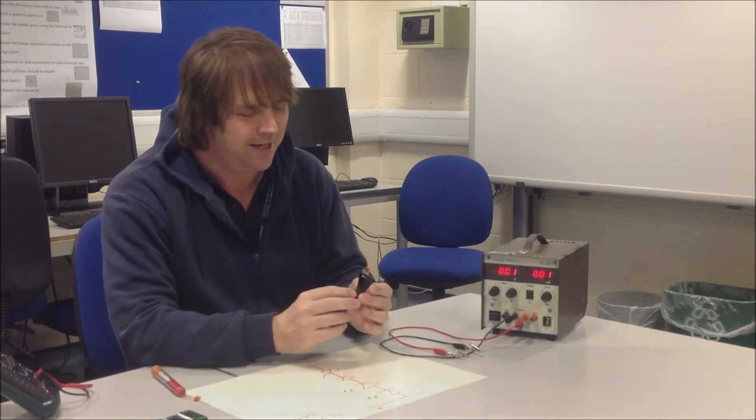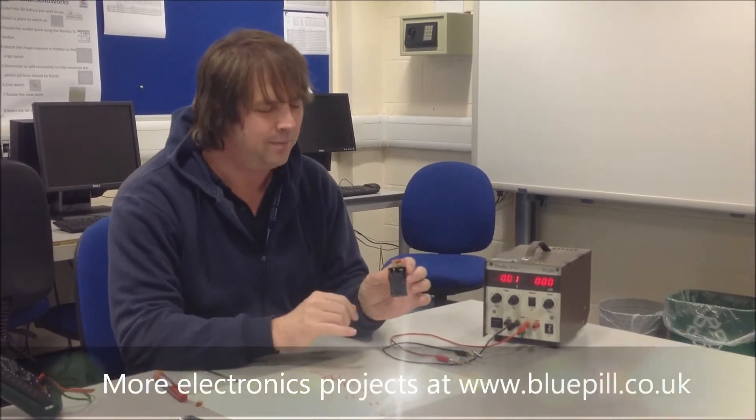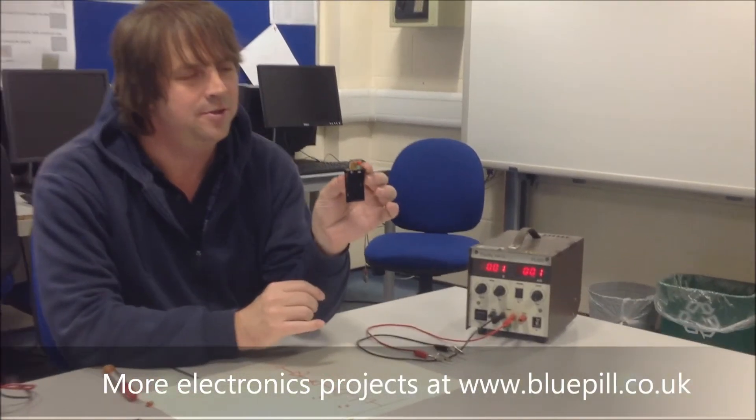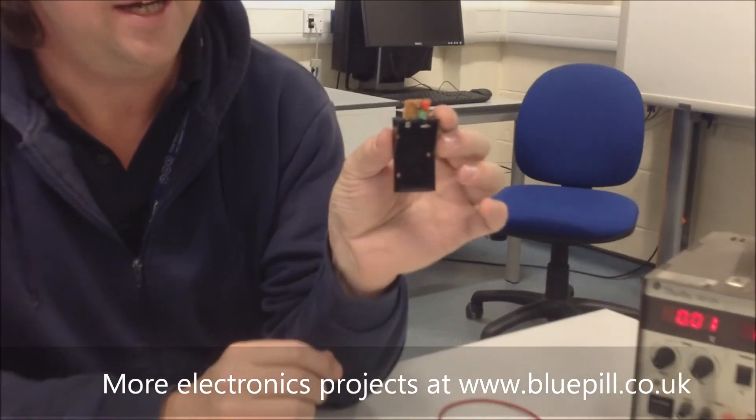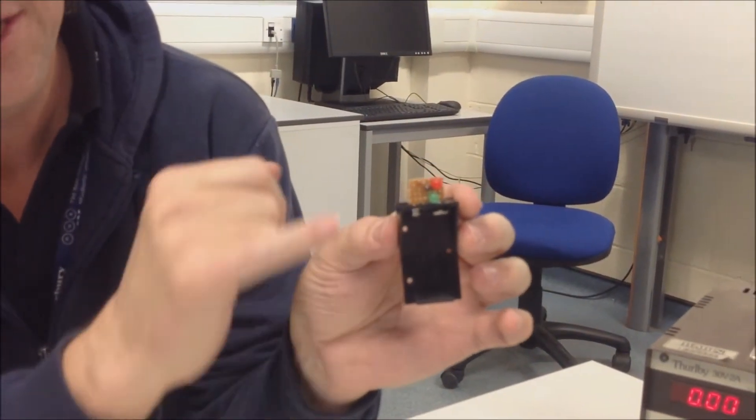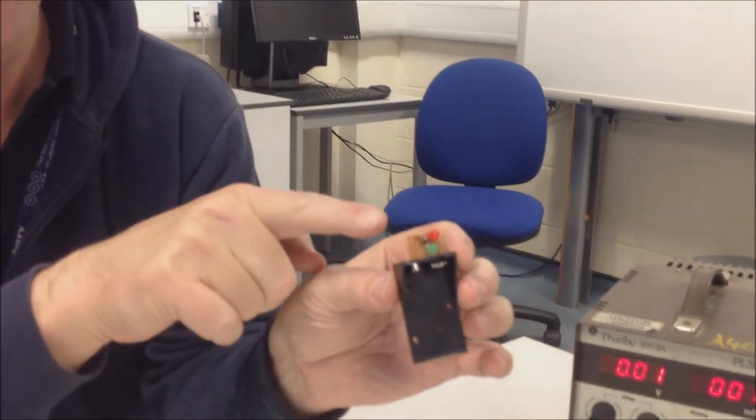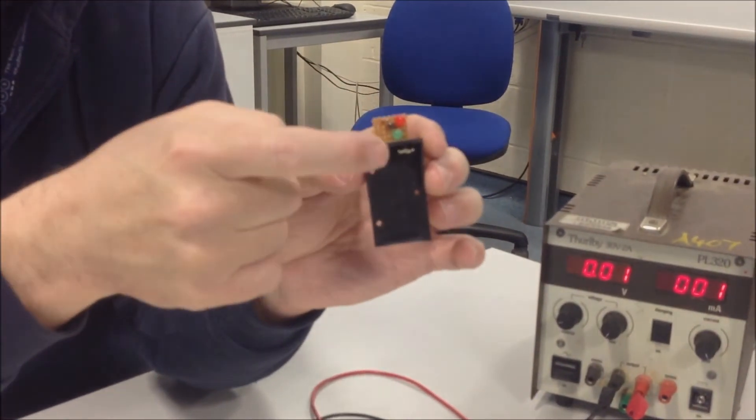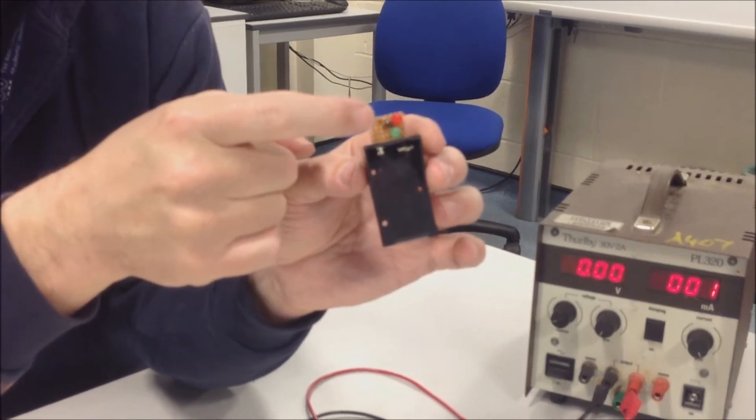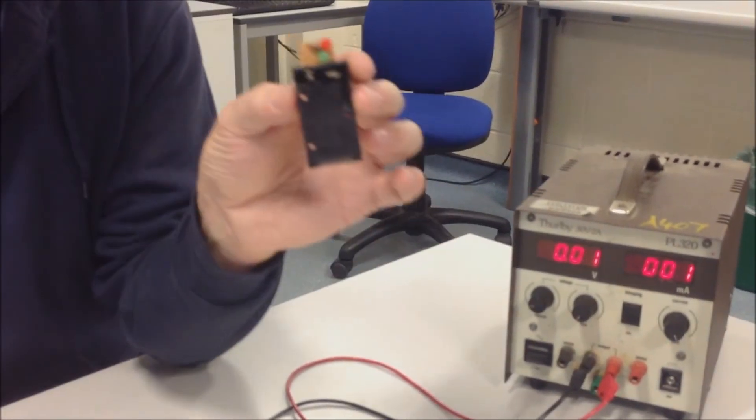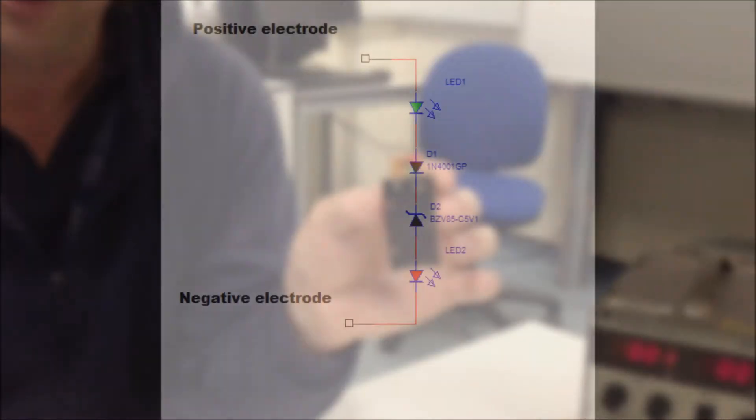Hi, welcome to my 9 volt battery tester. I don't know whether you can zoom in so you can see that. There it is. And it's basically just four components: a red LED, a green LED, a Zener diode and a normal diode. We've got the circuit diagram here and I'll pop that up on the video a little bit later on.